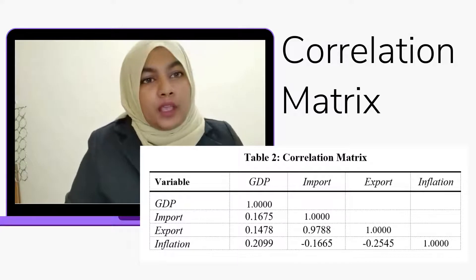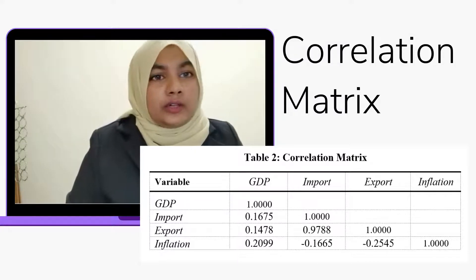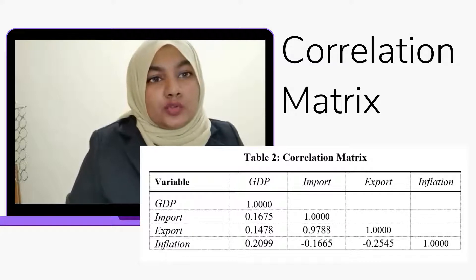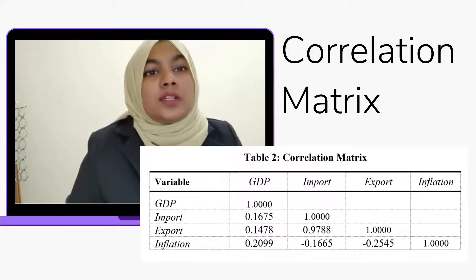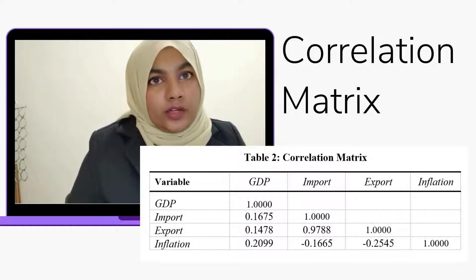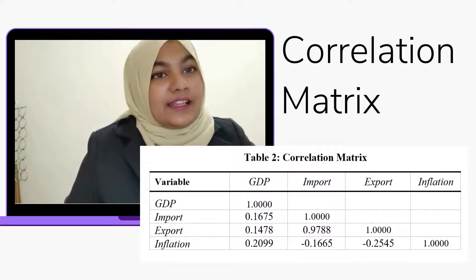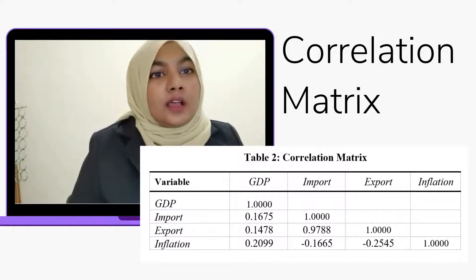Moving to Table 2, we can see the correlation matrix. The correlation matrix is mainly used to see whether variables are correlated or not. Based on the table, there is no multicollinearity in this research.